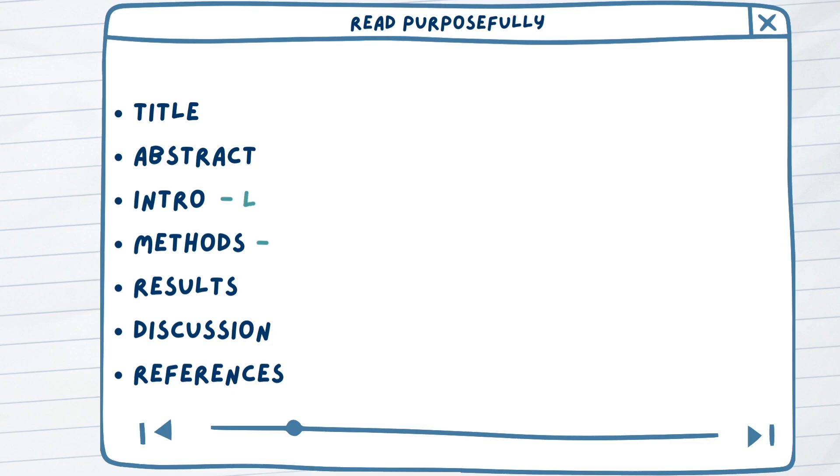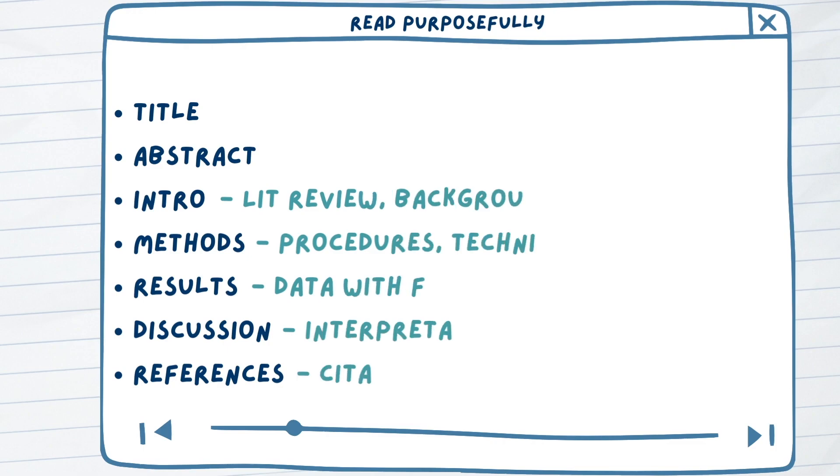Instead of reading a research article cover to cover, like how you would for a novel or a storybook, you should approach the research article with pointed questions. For example, if you're interested in understanding how an experiment was conducted, you might go directly to the methodology.